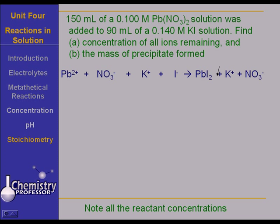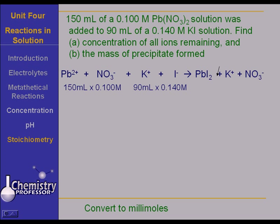Let's start out by noting all the reactant concentrations. We start out with 150 milliliters of lead ion and a nitrate ion solution. 150 milliliters times 0.1 molar. I haven't said yet what the concentration of the lead ion is, and I haven't said yet what the concentration of the nitrate ion is. I'm just making note of the volume and concentration of the solution I started out with. For the potassium iodide, we have 90 milliliters of a 0.14 molar solution. Now, let's convert everything to millimoles and find out how many millimoles of each one of those ions that we happen to have.